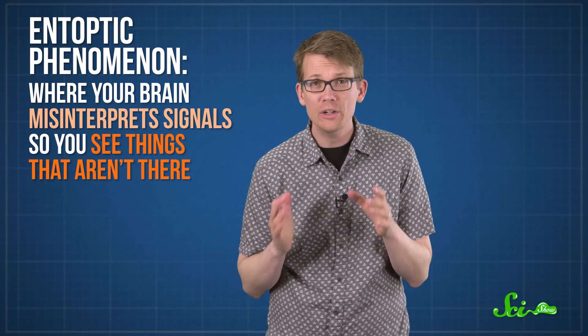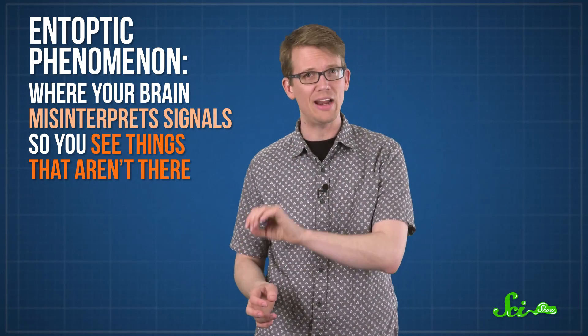These flickers are an example of what's known as an entoptic phenomenon, where your brain misinterprets signals so you see things that aren't really there. It's not quite the same as a full-blown hallucination, but it is messing with your perception of reality.